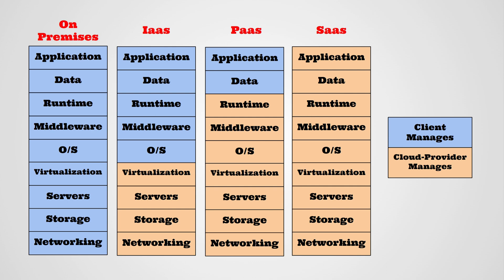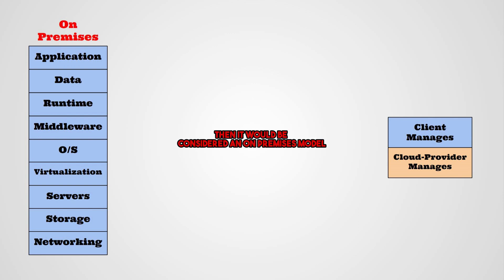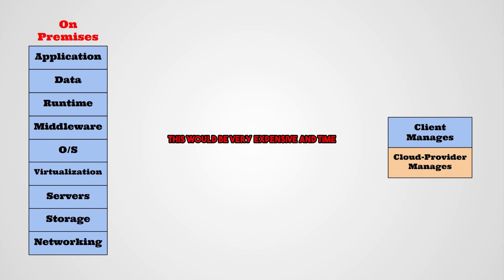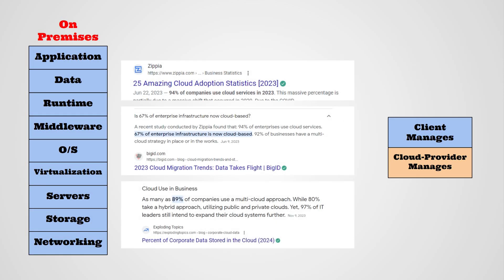Now that you know the cloud service models, let's analyze this chart comparing On-Premises to Infrastructure as a Service, Platform as a Service, and Software as a Service. In the On-Premises column, if you manage all services and infrastructure in your own data center, it would be considered an on-premises model. You would have to manage everything from the application, data, and runtime to the servers, storage, and networking. This would be very expensive and time-consuming. Around 90% of companies use some sort of cloud services, because they know the hassle of running everything on-premises.